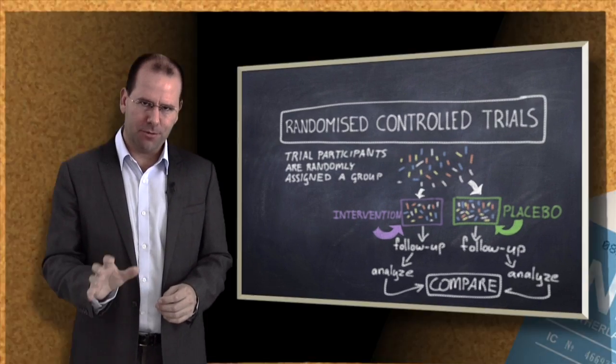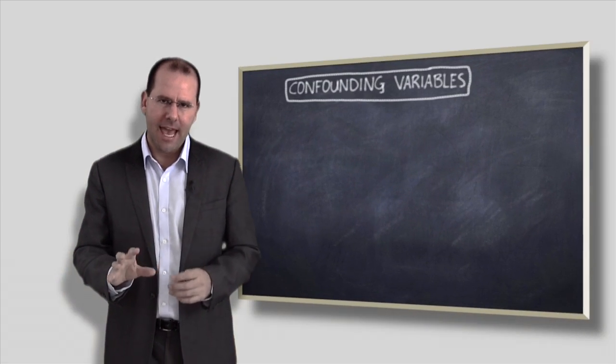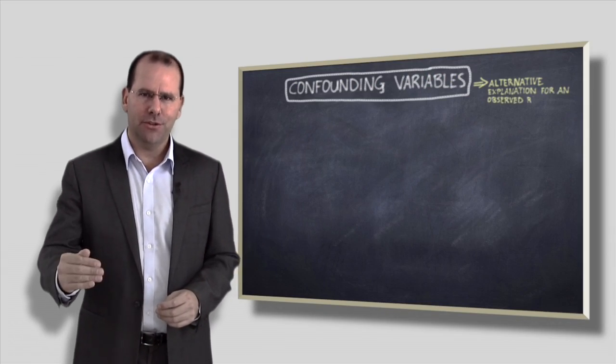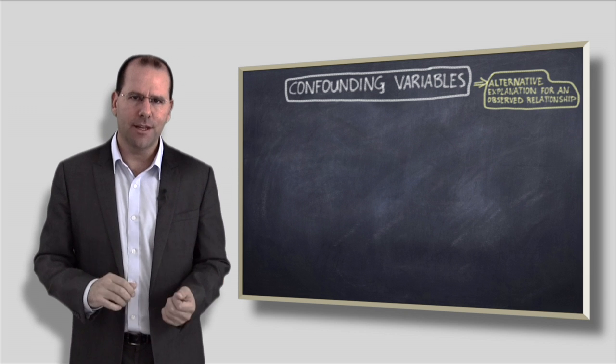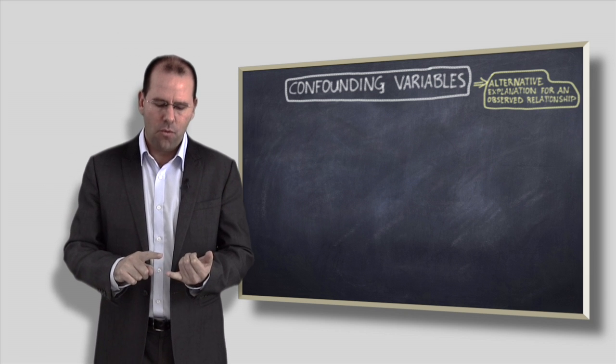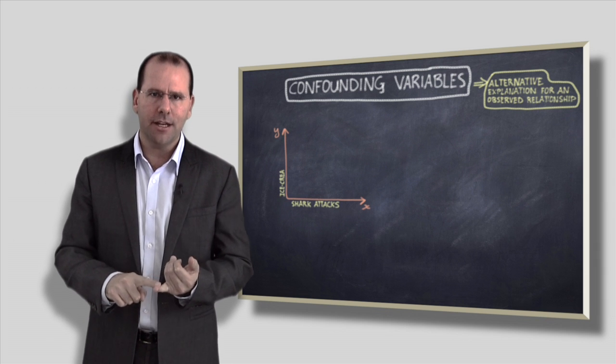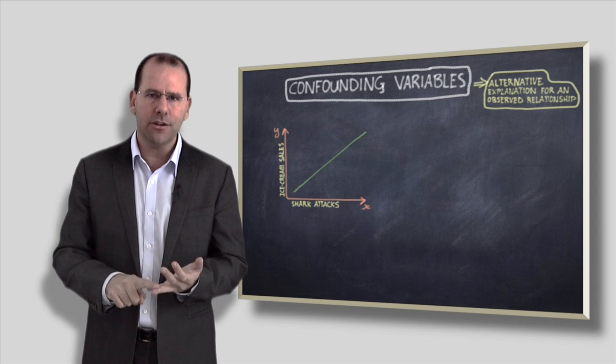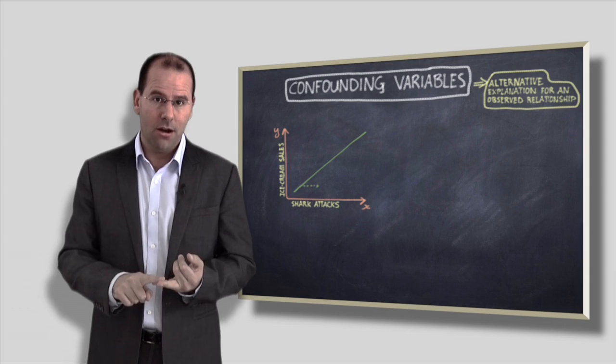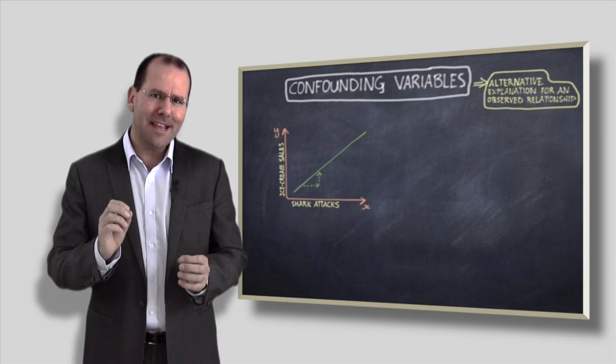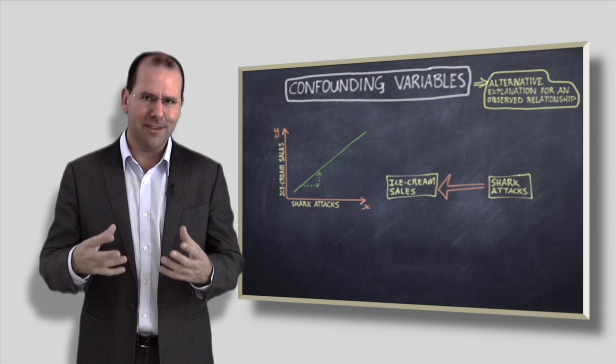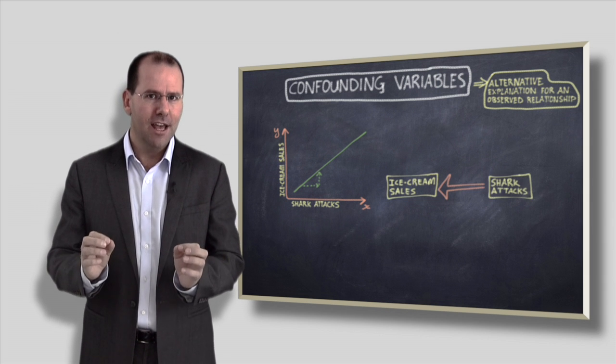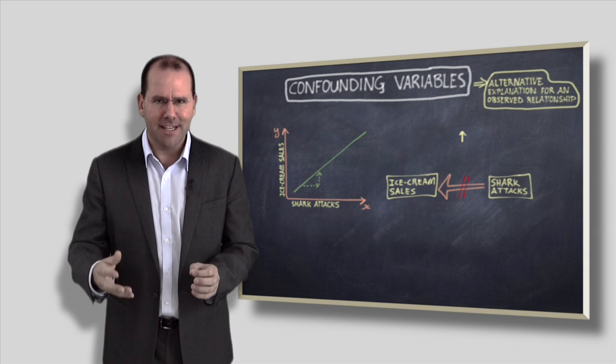One of the problems that they solve is the problem of confounding variables. A confounding variable really is an alternative explanation for a relationship that we've observed. So let's imagine for example that we've noticed that with an increase in shark attacks we see a corresponding increase in the sale of ice cream. We must assume that there's some alternative explanation for this relationship and the alternative explanation really is what we call a confounding variable, and in this case it'll be hot weather.